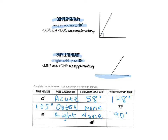In the last one, we have the complement, which is 68 degrees. We need to find the original angle measure, so since that's the complement, we do 90 minus 68, which tells us that the original measure was 22 degrees. This would be an acute angle because it's smaller than 90. For its supplement, 180 minus 22 gives us 158 degrees.